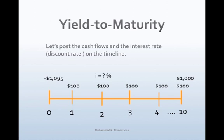The first step is to draw the timeline for the problem, then post the cash flows for the bond into the timeline. The time period is 10 years, present value is $1,095. The interest rate on the bond is 10%, so the annual coupon amount is computed by multiplying par value by 10%, which comes out to $100 per year. A par value of $1,000 future value is posted on the timeline, representing what the investor will receive at the end of 10 years. The yield to maturity is calculated by equating the cash outflows at period zero to the periodic cash flows and par value at the end of the maturity date. The interest rate that makes these two cash flows equal is the yield to maturity.